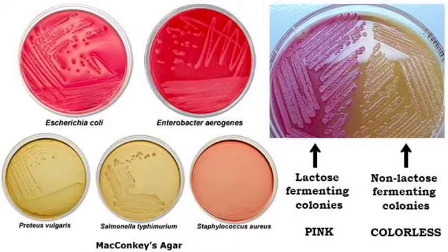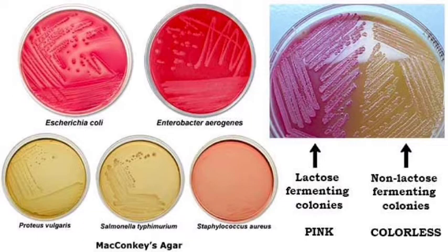Selective media generally selects the growth of a desired organism while stopping or killing non-desired organisms. An example is MacConkey agar, which contains bile salts and crystal violet that interfere with the growth of many gram-positive bacteria and favor the growth of gram-negative bacteria.